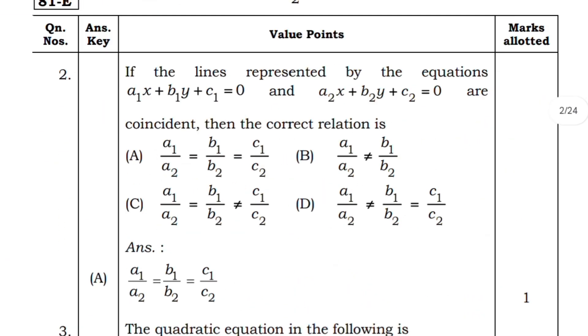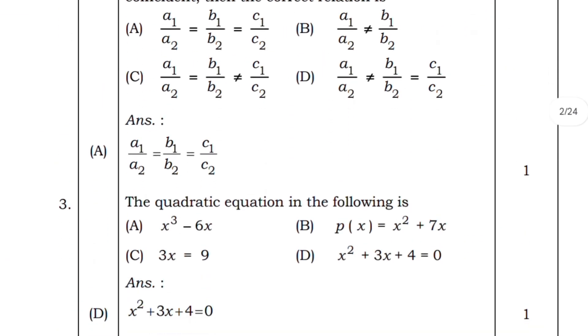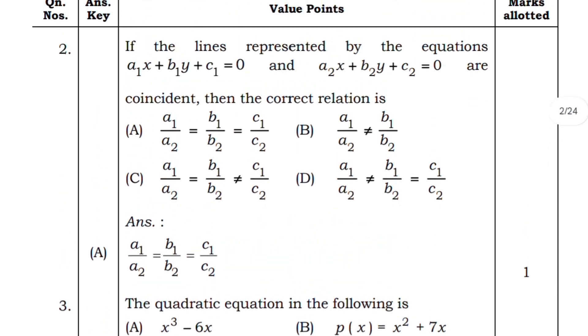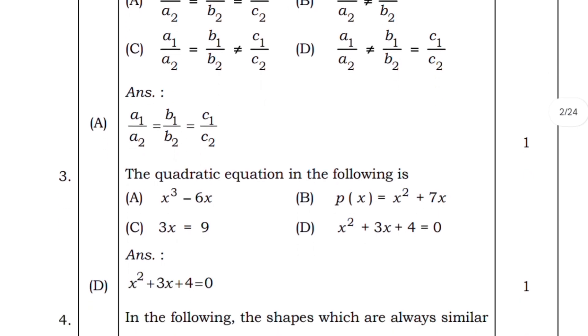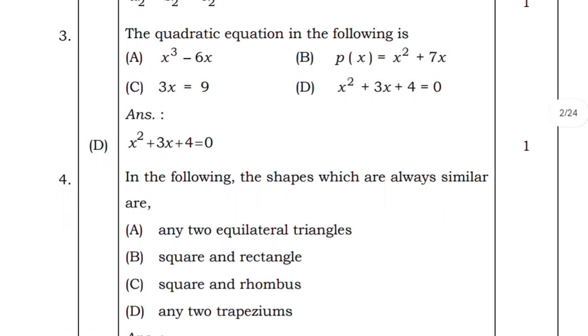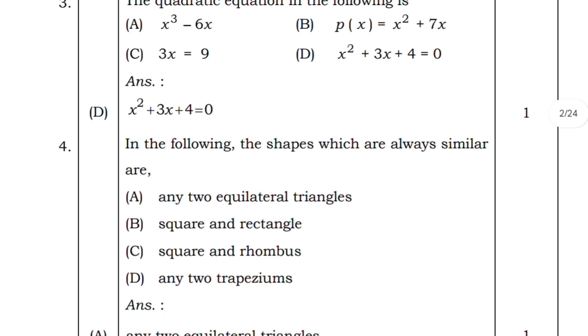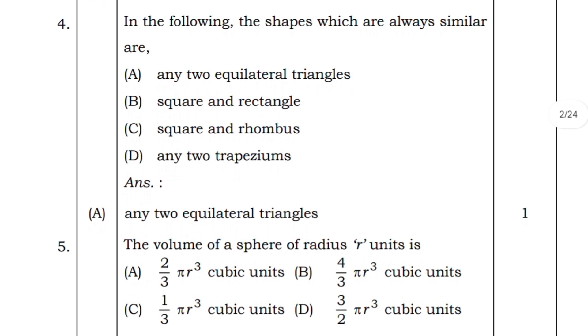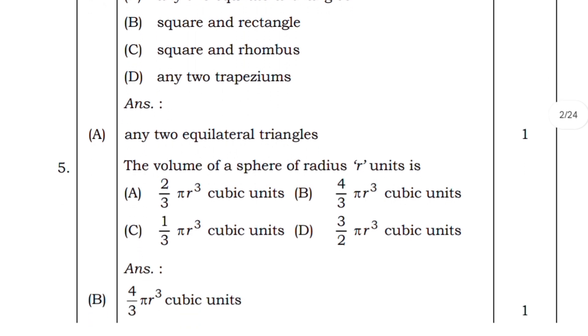Coming to the pair of linear equations question, the answer is 1 by 2. For the coincident lines question, they asked about the correct relations. In the quadratic equation, the following is x squared. Here they have asked the quadratic equation for the question about shapes which are always similar - the answer is any two equilateral triangles.